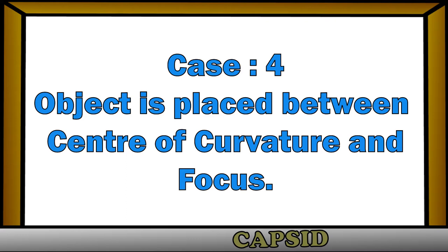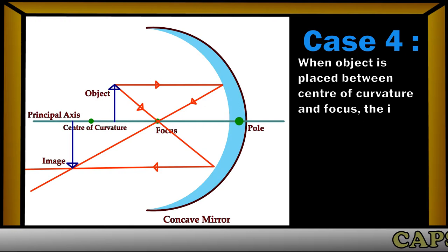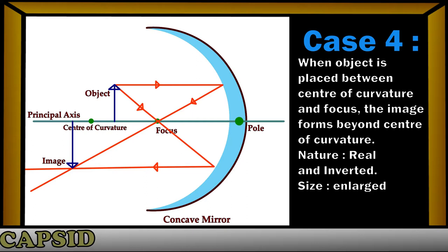Case 4: the object is placed between the center of curvature and focus. When the object is placed between the center of curvature and focus, the rays of light coming from the object meet beyond the center of curvature after reflection through the concave mirror. So the image forms beyond the center of curvature. The nature of the image will be real and inverted, and the size of the image will be enlarged.